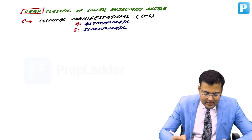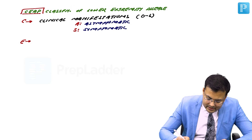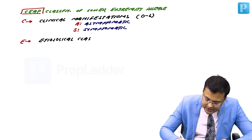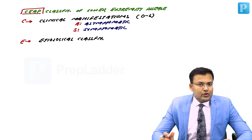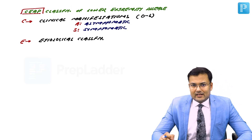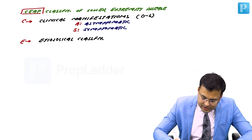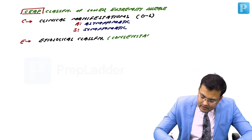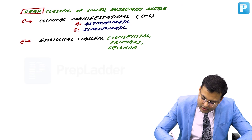E is the etiological classification. In etiology, it is going to be mentioned whether the condition is congenital, whether it is primary, or whether it is secondary. So this is what is mentioned under E — etiology.